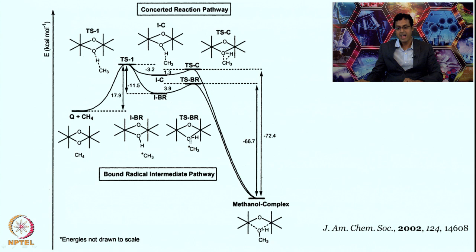In the next class we will look at how these intermediates form and examine the computational details from Professor Lipscomb's group. Keep studying methane monooxygenase — or bacterial multicomponent monooxygenase — a huge group of enzymes doing fascinating chemistry: methane to methanol, toluene to hydroxytoluene, phenol to catechol, olefin to epoxide. We will start looking at the reaction mechanism in more detail in the next class.